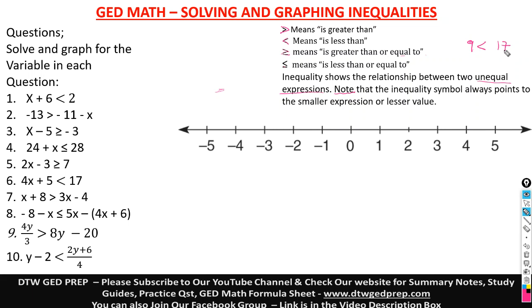So nine is lesser than 17. The sign will point to the lesser value. This is how you should remember the inequality symbol — if you're getting confused on how to place them, the sign will always point to the lesser value in any way you want to interpret it. As far as this pointed sign is facing a number, it means that number is lesser than the other.